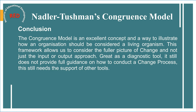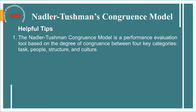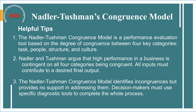Helpful tips: Tip 1 — the Nadler-Tushman congruence model is a performance evaluation tool based on the degree of congruence between four key categories: task, people, structure, and culture. Tip 2 — Nadler and Tushman argue that high performance in a business is contingent on all four categories being congruent, and all inputs must contribute to a desired final output. Tip 3 — the Nadler-Tushman congruence model identifies incongruences but provides no support in addressing them; decision-makers must use specific diagnostic tools to complete the whole process.